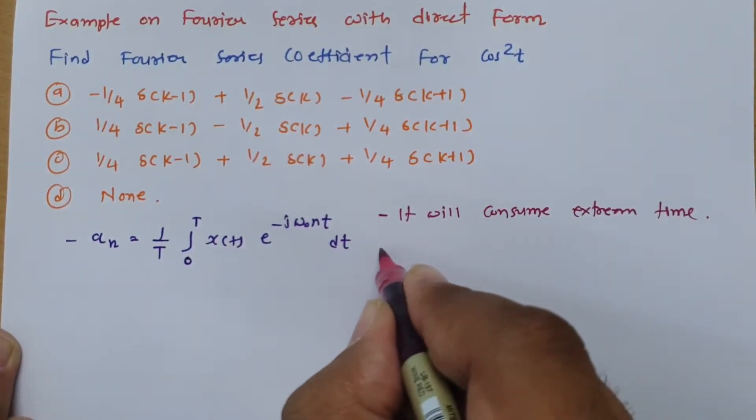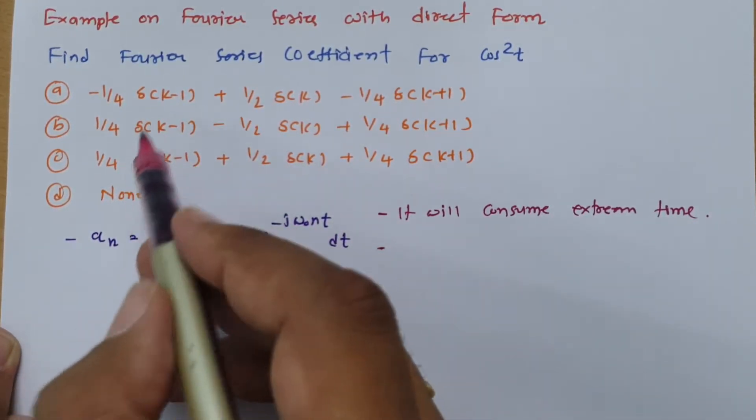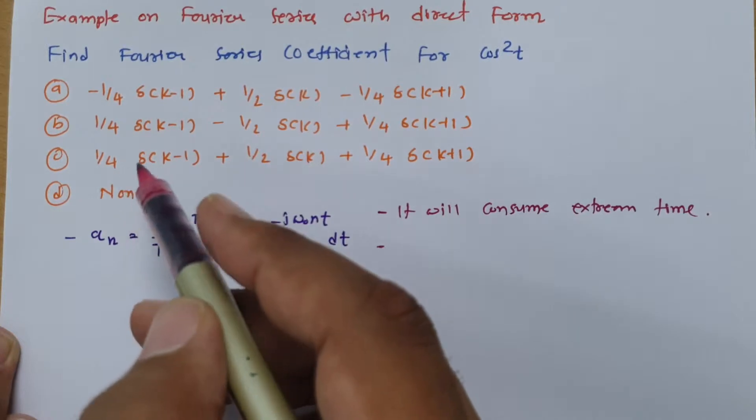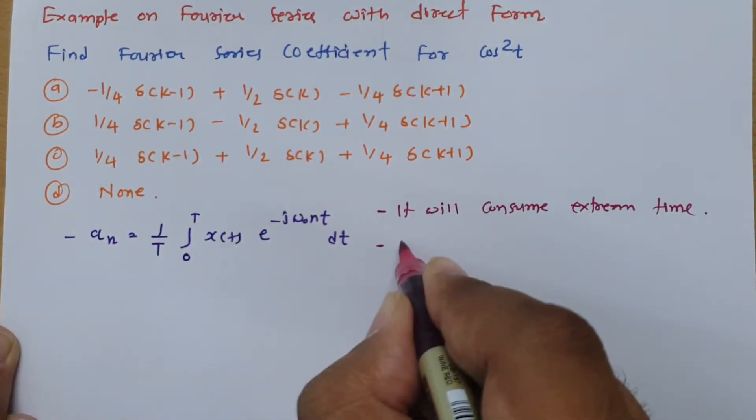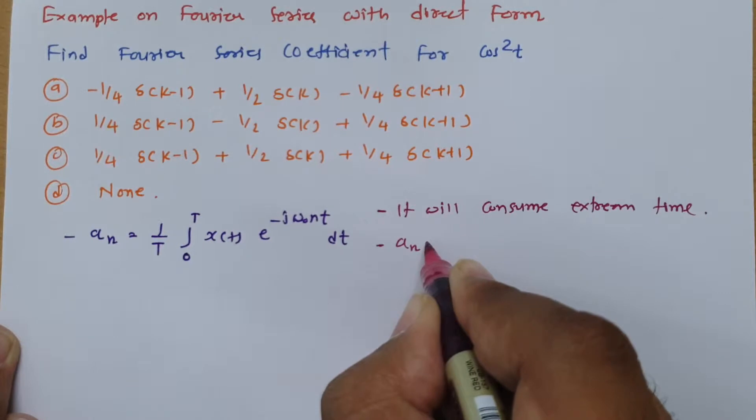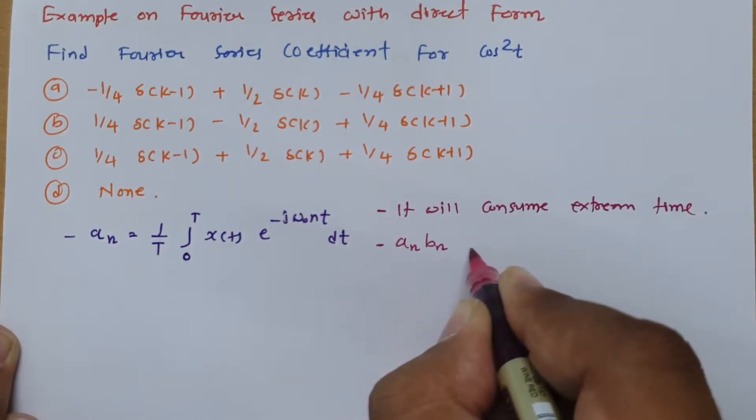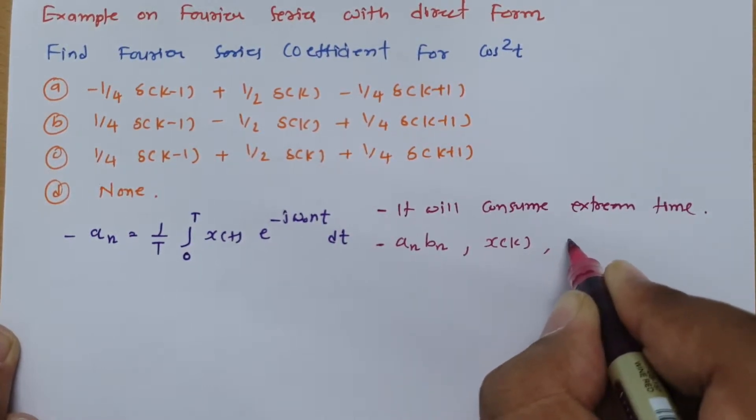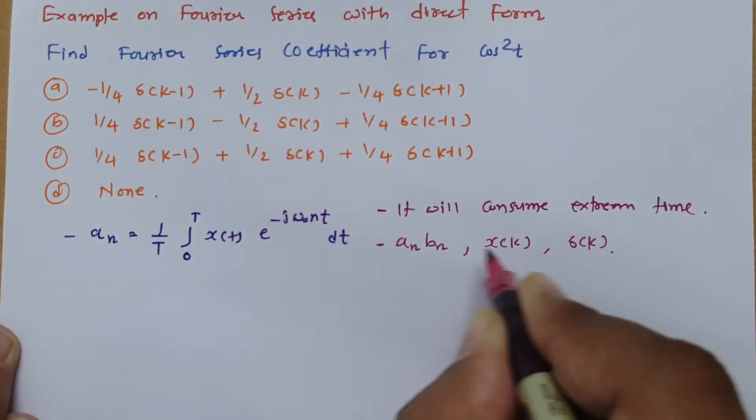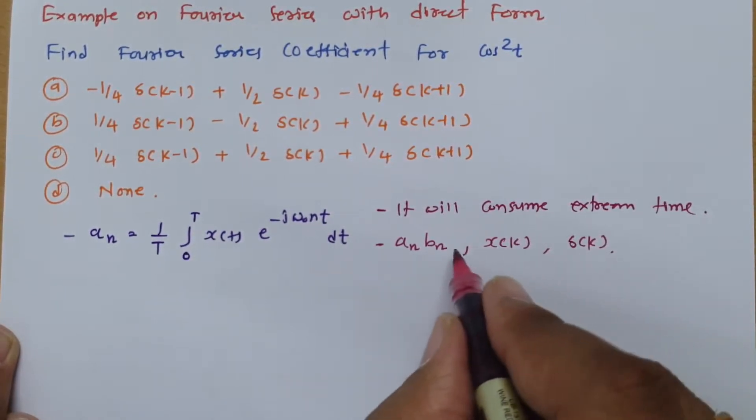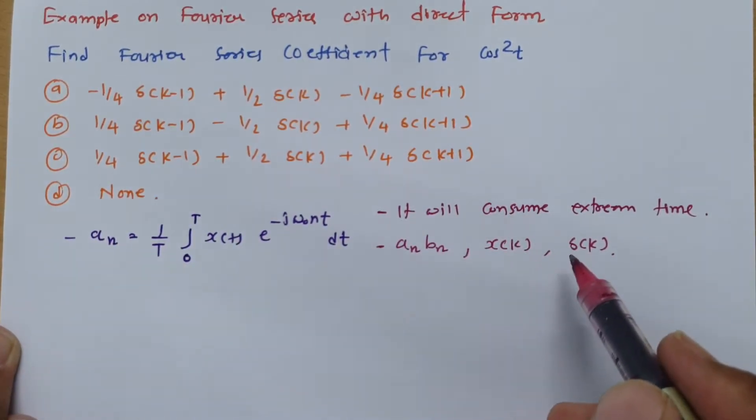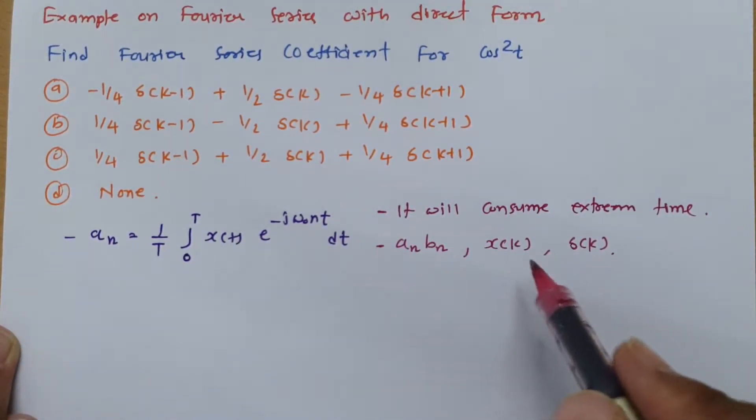So for that, see whenever you have ABCD and if you see Fourier series calculation, then one should understand Fourier series could be represented in this way. You can have coefficient an and bn, you can have coefficient in terms of x of k, you can have coefficient in terms of delta of k. So this might be the case which may be given to you to represent Fourier series coefficient. So here we have delta of k way to represent Fourier series coefficient.